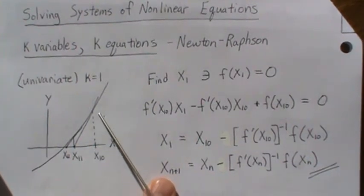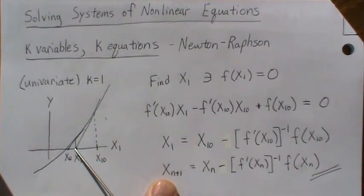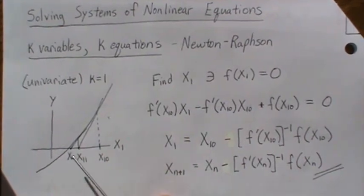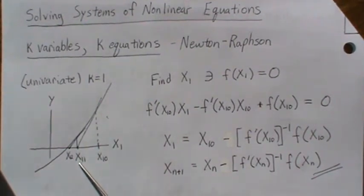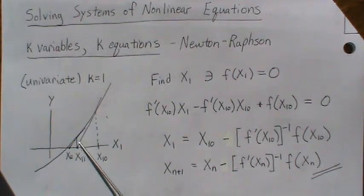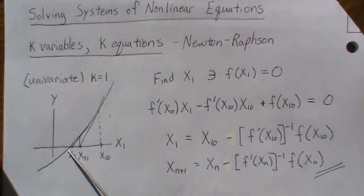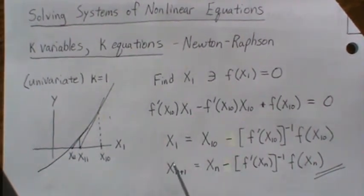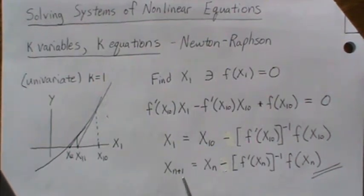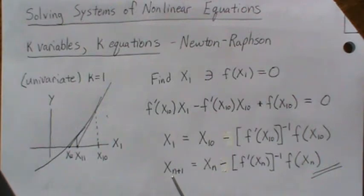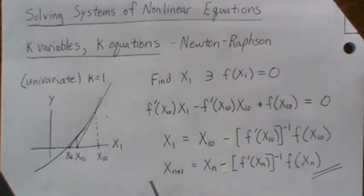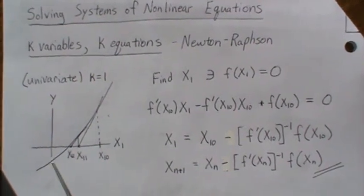So what we just did was we go up here and then we solve for here. Now we redo what we just did. We take this point and pretend like it's our new x-naught value, find the tangent line, find the intercept, and then we keep going. This is just the iterative process until x in each successive value for x converges to a number and then we can stop — there's some sort of tolerance associated with it.